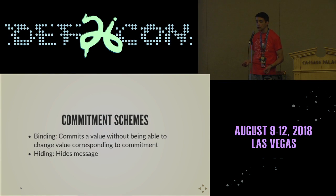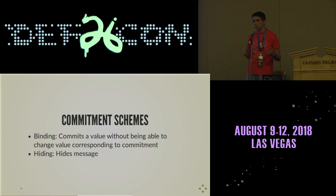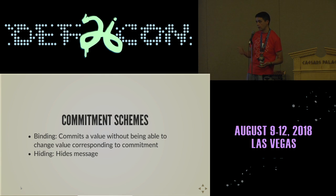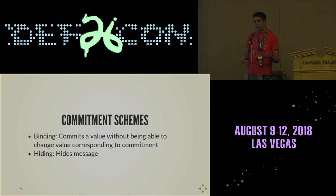The next thing I'll mention are commitment schemes. Commitment schemes allow for zero-knowledge proofs. This allows you to say: I'm going to commit to this value, but I'm not going to show you what it is first. It has a binding property and a hiding property. Binding means I can't take back that that value was from me. Hiding means you won't know what the value was until I open the commitment.